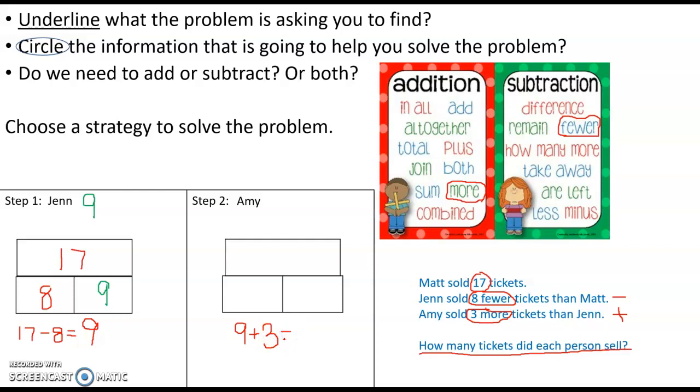Remember, in a model like this, the answer to an addition problem, the greatest number, is going to go on the top. So we don't know what goes up here, but we do know that our addends can go down here.